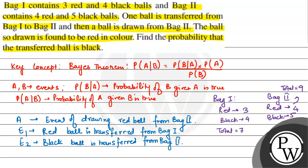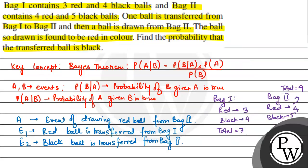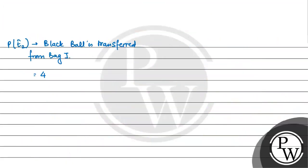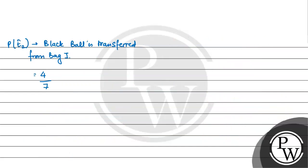The probability of E2, that a black ball is transferred from Bag 1, equals 4 out of the total 7 balls, giving us 4 by 7. Since Bag 1 has 4 black balls and a total of 7 balls.